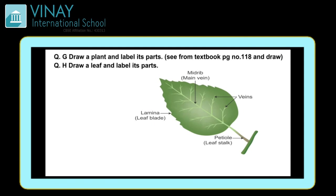Question G: draw a plant and label its parts. Baccho, iske liye maine reference diya hai — textbook mein jo draw kiya hua hai page number 118 par, wahi same aapko draw karna hai. Question H: draw a leaf and label its parts. Maine ek picture diya hai jismein labeling ki hai — yeh jo leaf stalk hai petiole, aur leaf ki border se usko hum leaf blade kehte hain. Main vein hai aur side veins bhi hain.